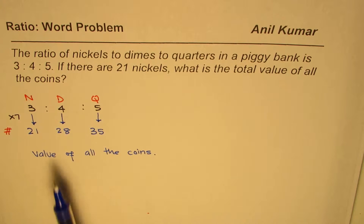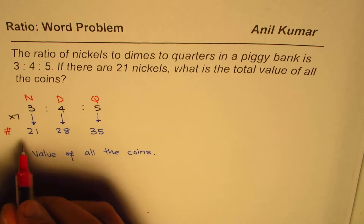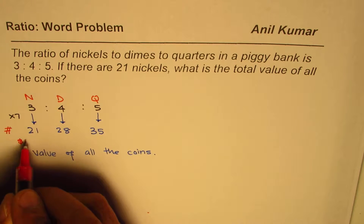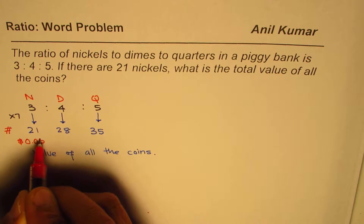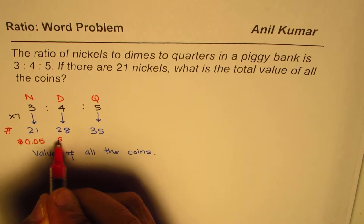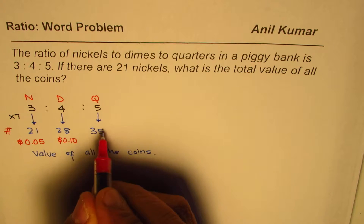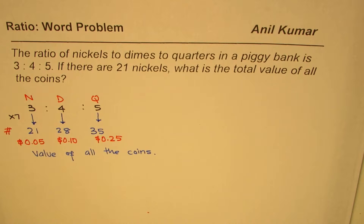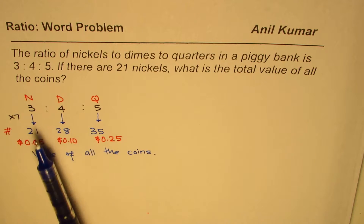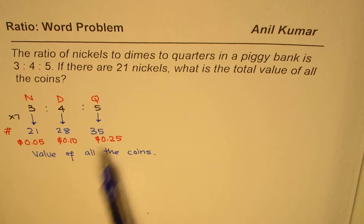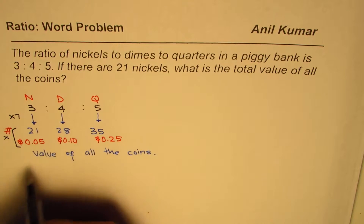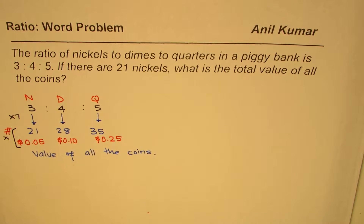Now the question is, what should be the value of these coins? For each coin there's a value. Nickels is 5 cents, which is $0.05. Dimes is 10 cents, so in dollars, $0.10. Quarters — a quarter of a dollar is $0.25. So that is the value of each coin. If you have 21 nickels, 28 dimes, and 35 quarters, we'll multiply the count by the value and then add it all up.